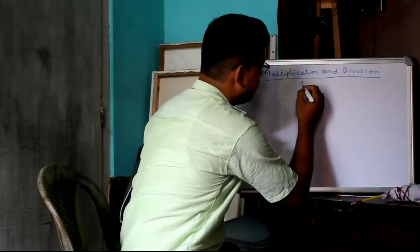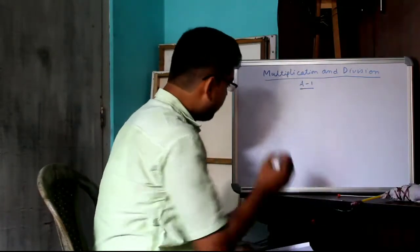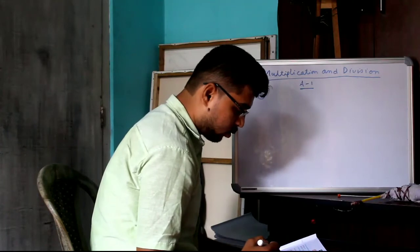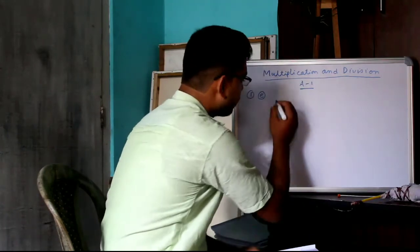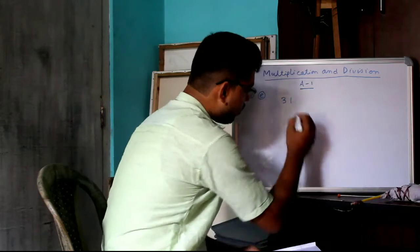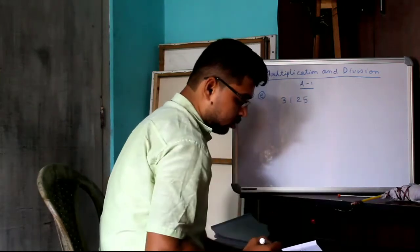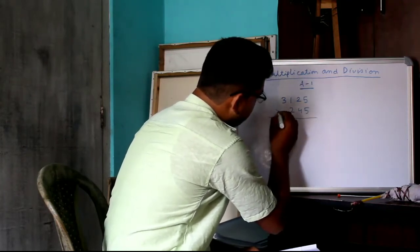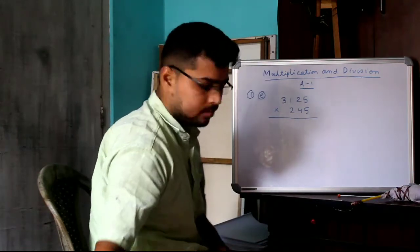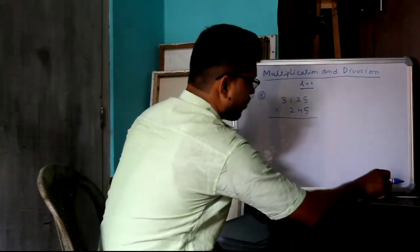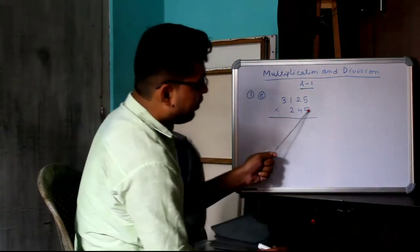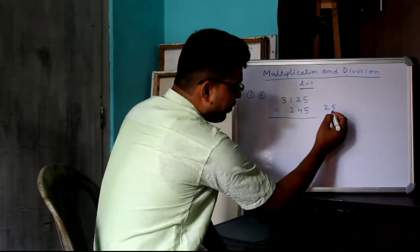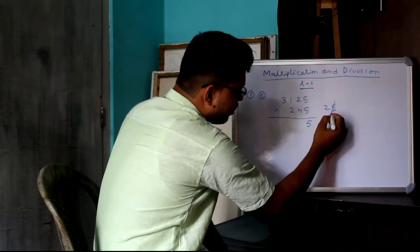Activity 1, 1E: 3125 x 245. See, 5 x 5, 25. 5 x 5, 25, 5 is here, 5 will come, 5 gone.